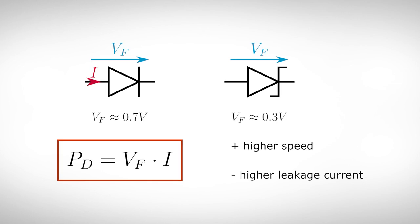One solution would be to replace the standard silicon diode with a so-called Schottky diode, which only has a voltage drop of about 0.3V in forward direction. As a bonus, Schottky diodes have a higher switching speed in general, but unfortunately they also have a higher leakage current in reverse direction.